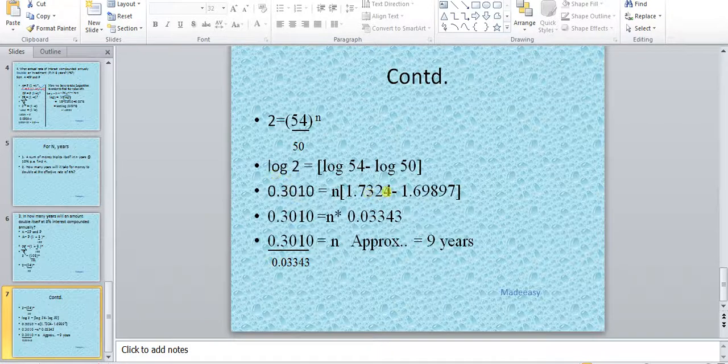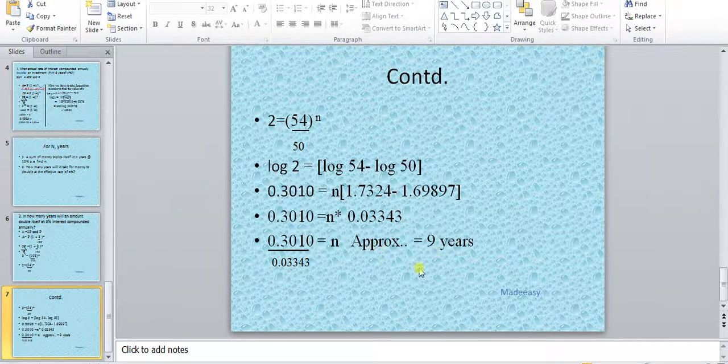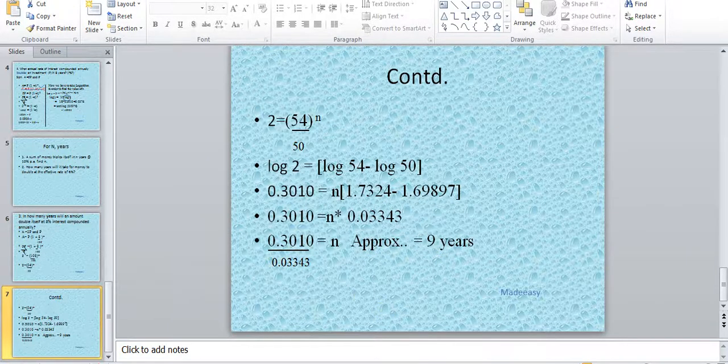We take log of 54 and log of 50, then we take log of 2. This value would become the denominator here. We divide it by this value and the approximate value comes to 9 years.